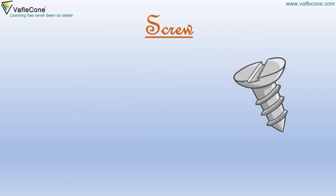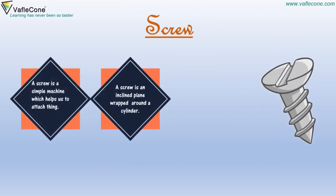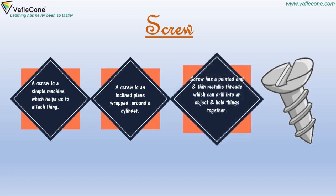Screw — a screw is a simple machine which helps us to attach things. A screw is an inclined plane wrapped around a cylinder. It has a pointed end and thin metal threads which can drill into an object and hold things together.